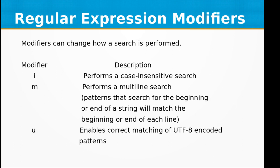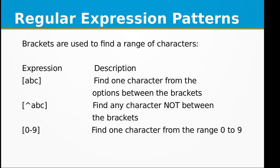Let's look at regular expression modifiers, which can change how a search is performed. 'i' performs a case-insensitive search; 'm' performs a multi-line search where patterns searching for the beginning or end of a string will match the beginning or end of each line; 'u' enables correct matching of UTF-encoded patterns. Brackets are used to find a range of characters — for example, [abc] finds one character from the options between the brackets, [^abc] finds any character NOT between the brackets, and [0-9] finds one character from the range 0 to 9.